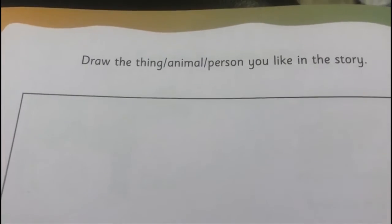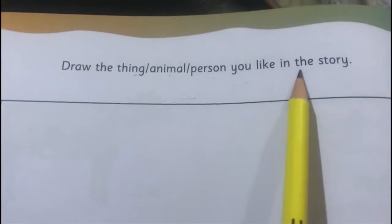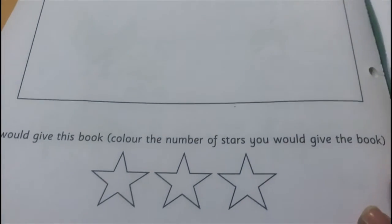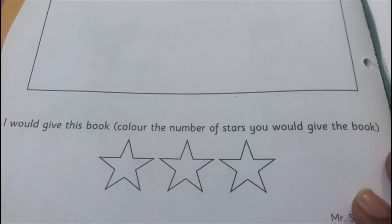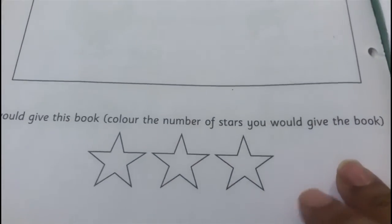After this, children, we turn to the next page — page number 64. Again, over here, children, you will write the date on top. Draw the thing, animal, or person you like in the story. In this box, you have to draw the thing, the animal, or the person you like in the story. And after that, you are going to do the last question, which is: I would give this book how many stars? One star, two stars, or three stars? This is how you are going to complete the book review.